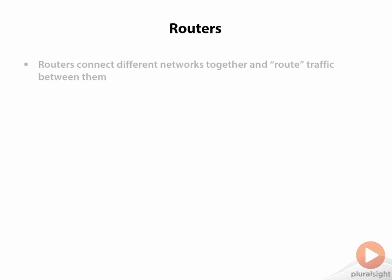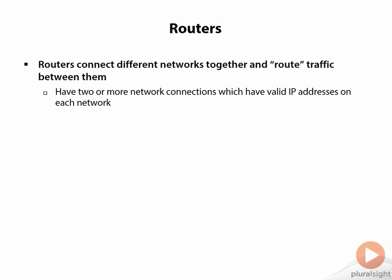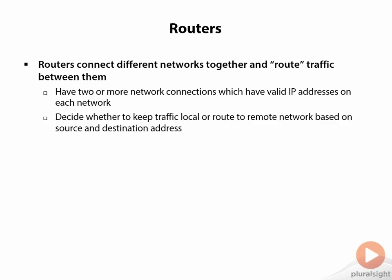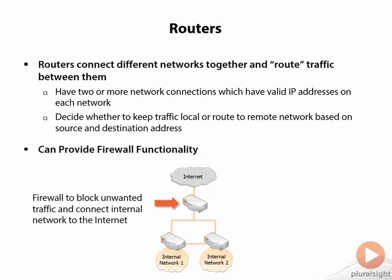Next we have routers. A router connects different networks together and allows you to route traffic between them. They have two or more network connections with valid IP addresses on each network, so it has to have an IP address on each network to communicate between the two. It decides whether to keep traffic local or route to a remote network based upon the source and destination IP addresses. Routers can also provide firewall functionality to block unwanted traffic.